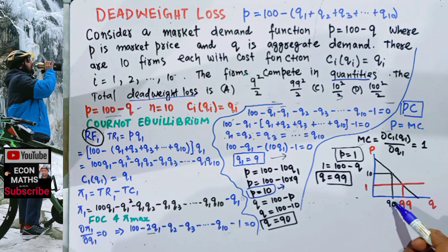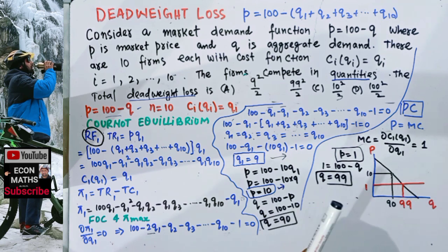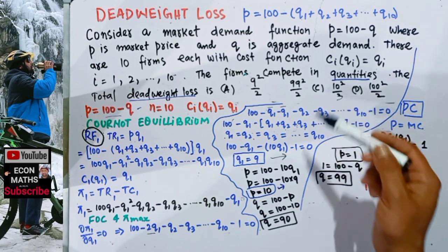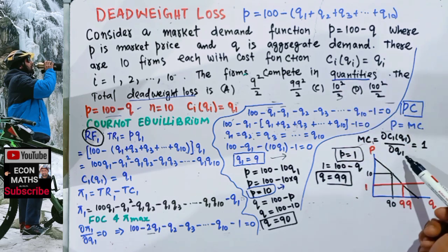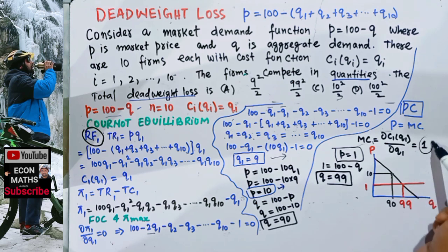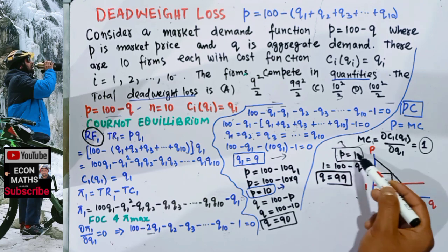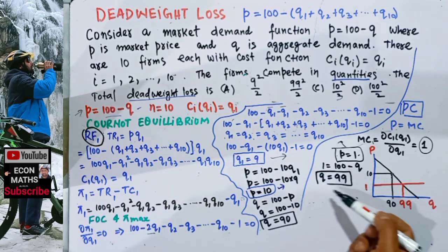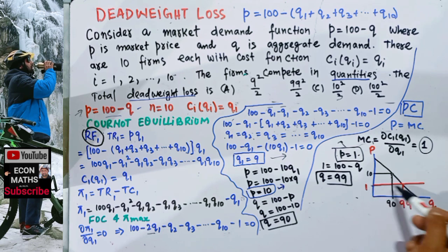Now we compare with efficient production under perfect competition, where price equals marginal cost. The marginal cost of any firm is the derivative of its cost function C_i = Q_i with respect to Q_i, which equals 1. So in perfect competition, P = MC = 1. Plugging P = 1 into the demand function: Q = 99. So under perfect competition, price is 1 and total output is 99.